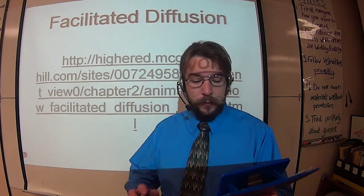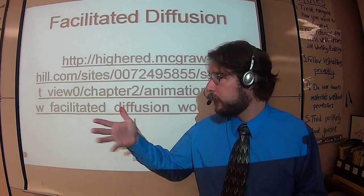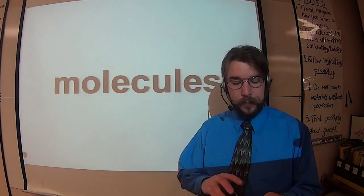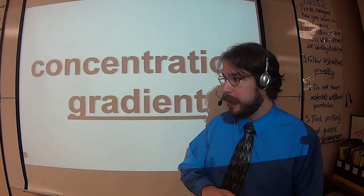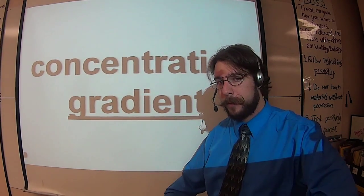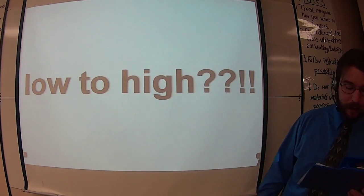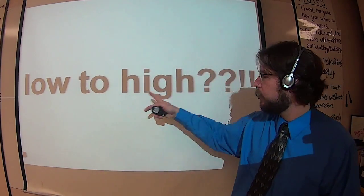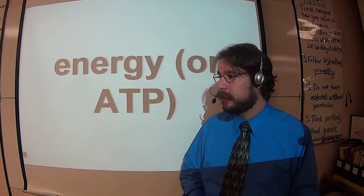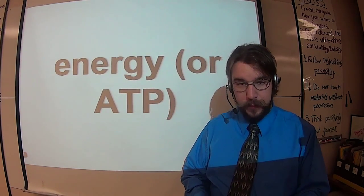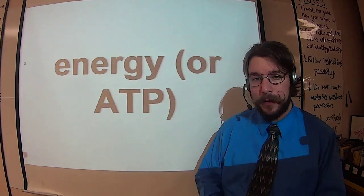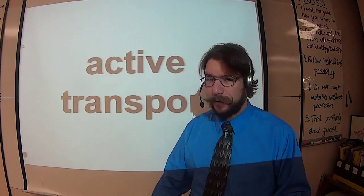If our cells need to move molecules against their concentration gradient, which way is that? That's from low to high, the way they don't want to go. Molecules don't naturally flow this way. So if we want to move them from low to high, that's going to require the use of energy or ATP on behalf of the cell. And because the cell membrane is taking a more active role, expending ATP to make this happen, we call this active transport.